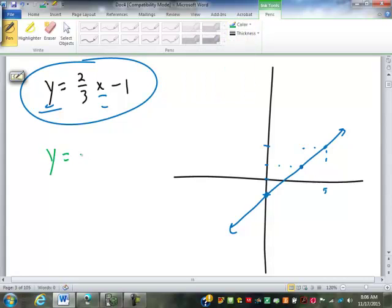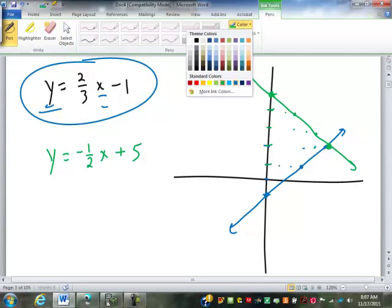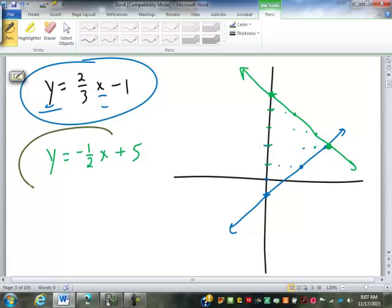So, now let's say I have another equation. It looks like that. So, now this one I start at 5. And from there I go down 1 over 2. Down 1 over 2. Down 1 over 2. What's that green line represent? That's all the points that are solutions to that green equation.